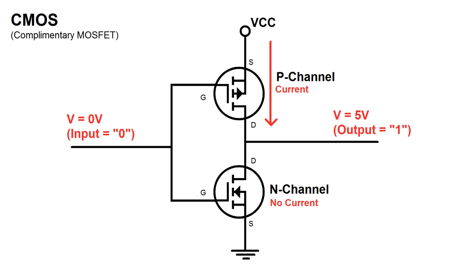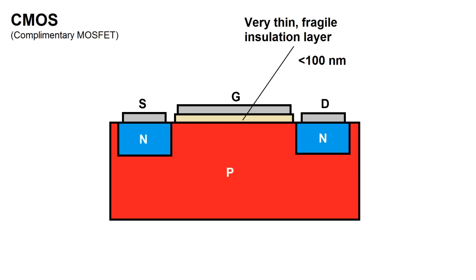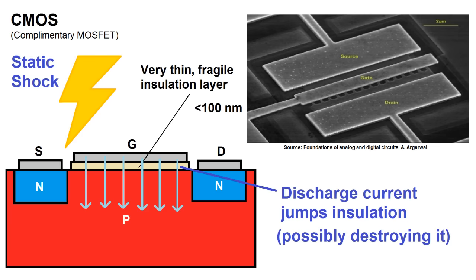There is a downside, though, which is the fragility of CMOS elements. The gate insulator is extremely thin — usually less than 100 nanometers — so it takes very little voltage to exceed the dielectric strength of this small strip of material and cause current to flow across it. In a high-density CMOS chip like a CPU, as little as 7 or 8 volts can overpower the insulation. A static shock from your finger is usually at least a few thousand volts, and there's sufficient energy that the short-circuit current across the gate insulation will damage or destroy it, rendering the MOSFET completely useless. Hence, CMOS chips have to be handled with extreme care.